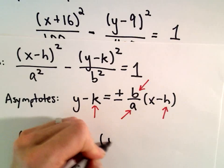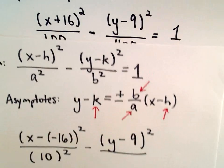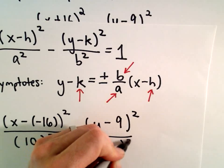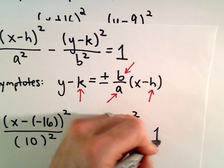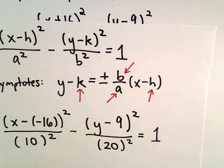Then we've got y minus 9, we can leave that part alone. This is all over 400. Again, I want to write that as a number squared, a positive number being squared. We can write 400 as 20 squared.